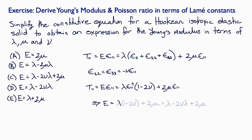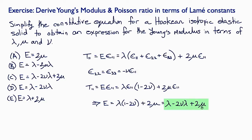Now we can cancel epsilon 11 on both sides and get that E is equal to lambda times (1 minus 2 nu) plus 2 mu, or lambda minus 2 nu lambda plus 2 mu, which is answer C.